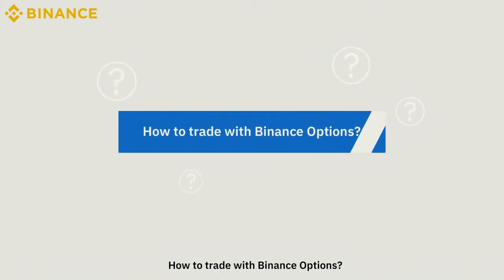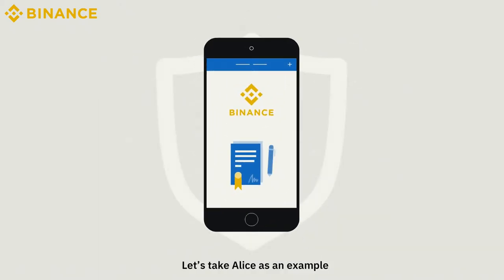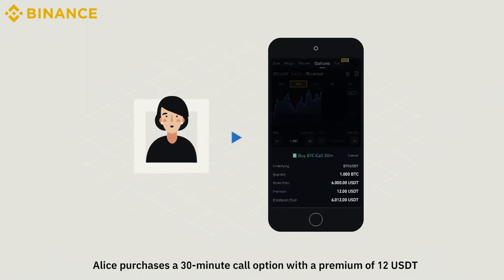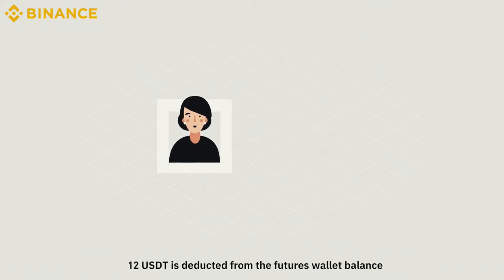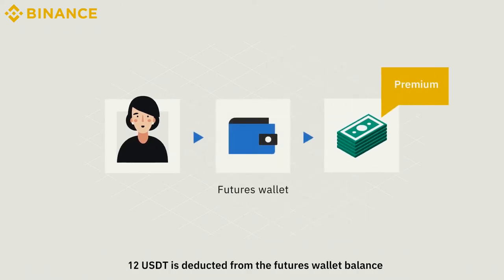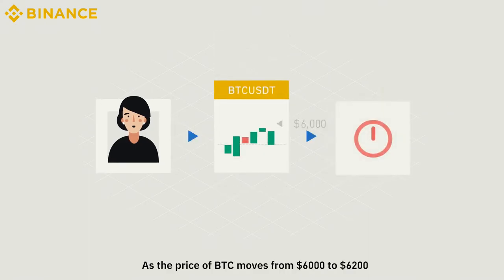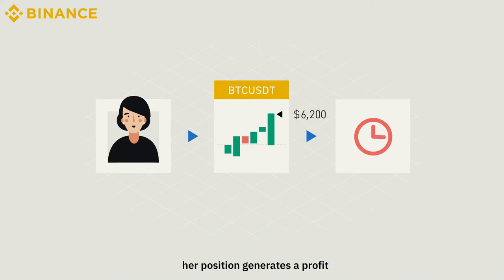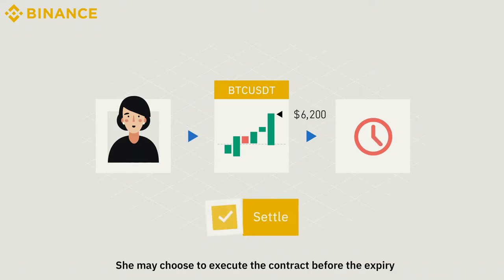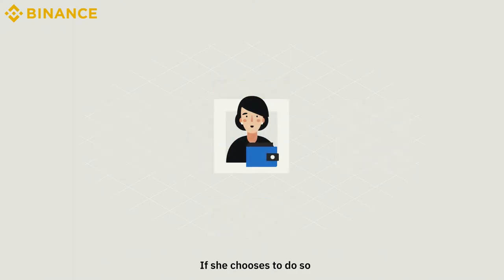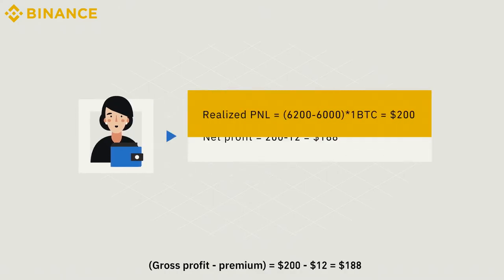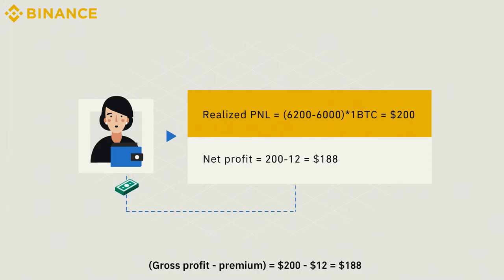How to trade with Binance Options? Let's take Alice as an example. Alice purchases a 30-minute call option with a premium of $12 USDT, which is deducted from the futures wallet balance. As the price of Bitcoin moves from $6,000 to $6,200, her position generates a profit. She may choose to execute the contract before expiry, and her net profit will be calculated as: gross profit minus premium equals $200 minus $12, which equals $188.